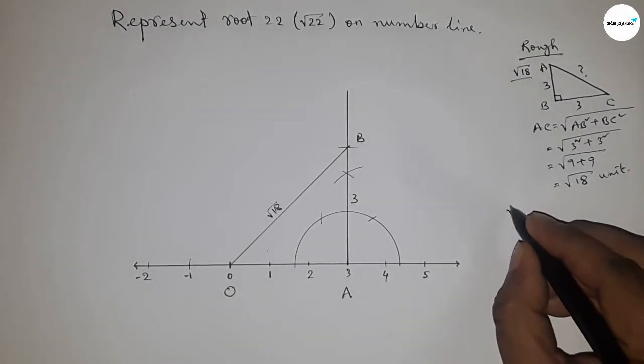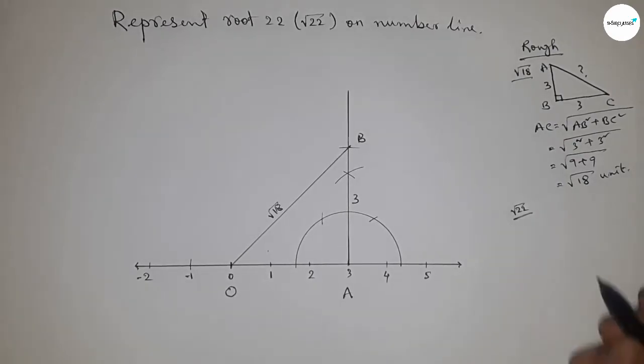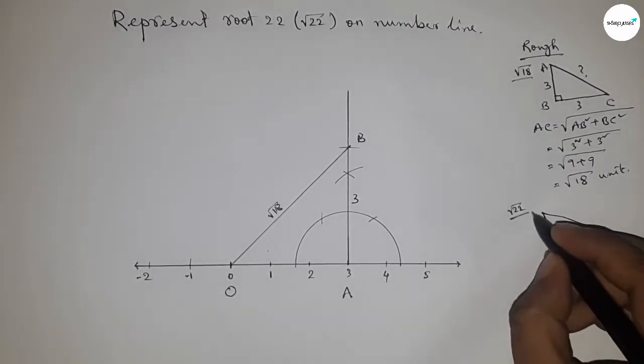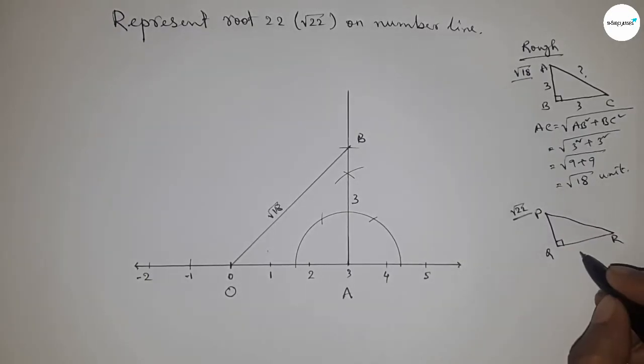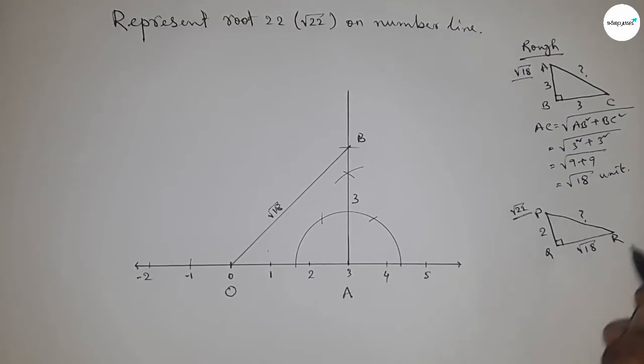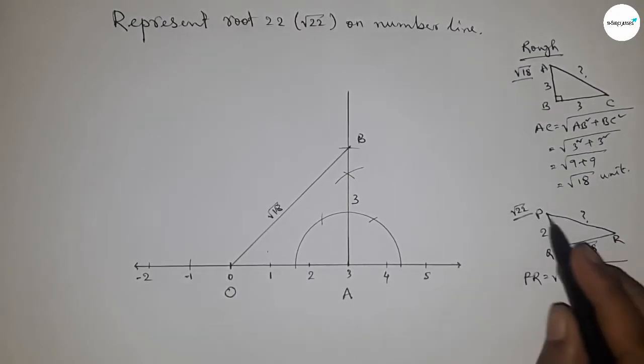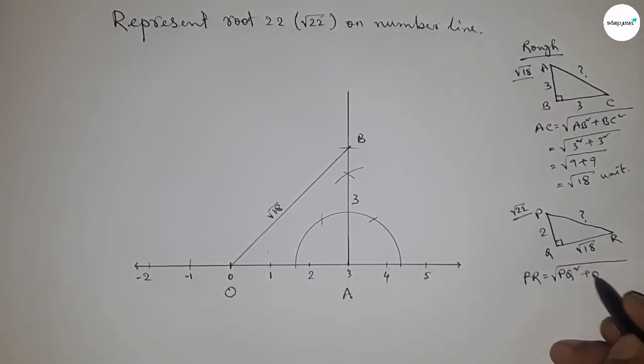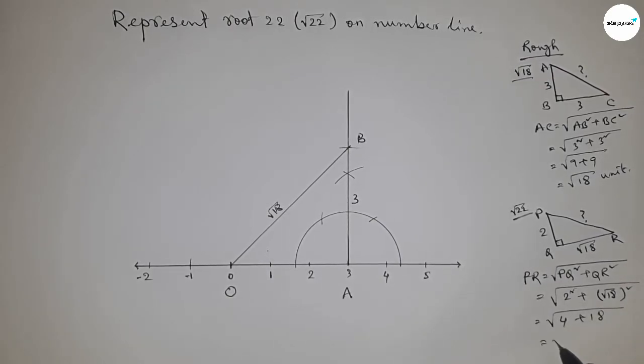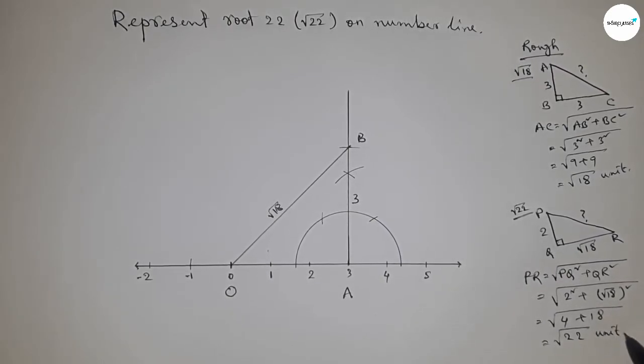Now talking about root 22. If there is a right angle triangle PQR with base root 18 and height 2, then what is hypotenuse? So hypotenuse equal to root over height squared plus base squared. So putting the value of height and base, this is 2 squared plus root 18 whole squared, so this is 4 plus 18, so this is root 22 unit.